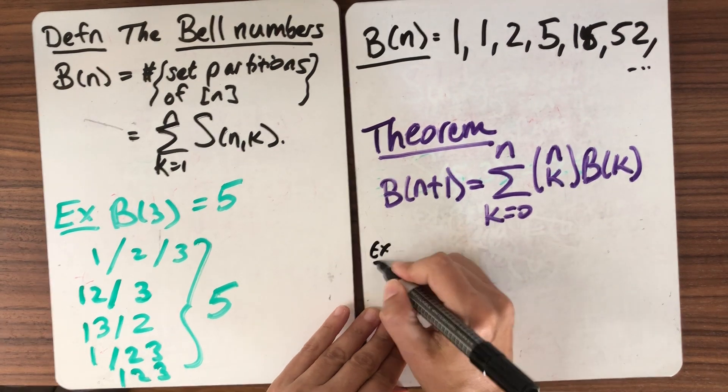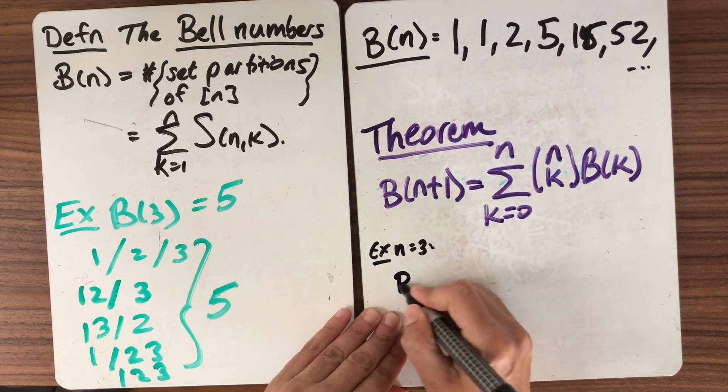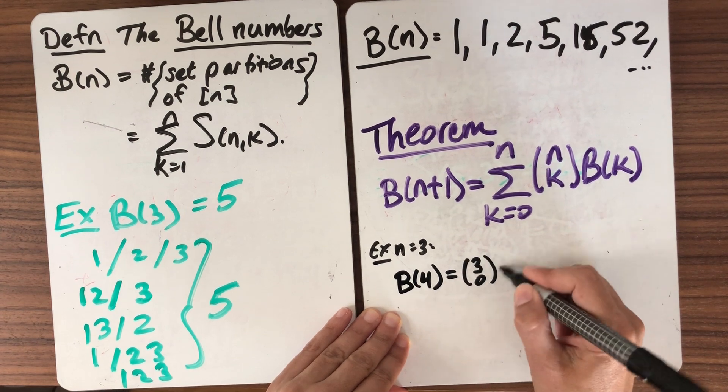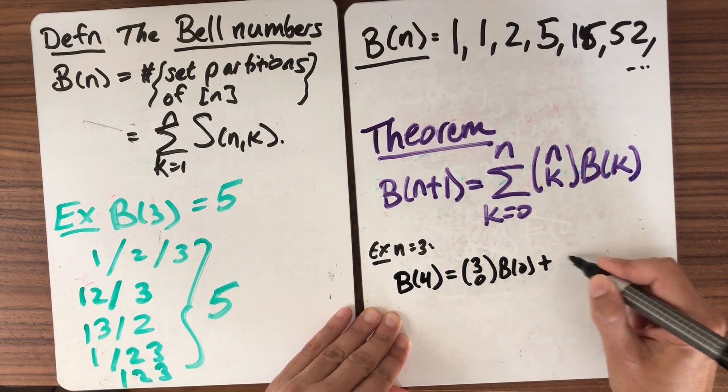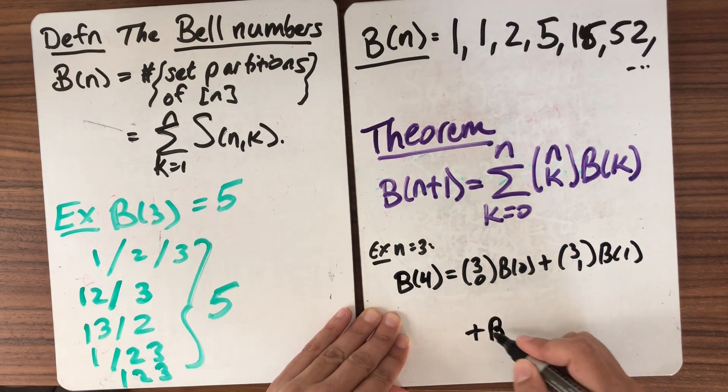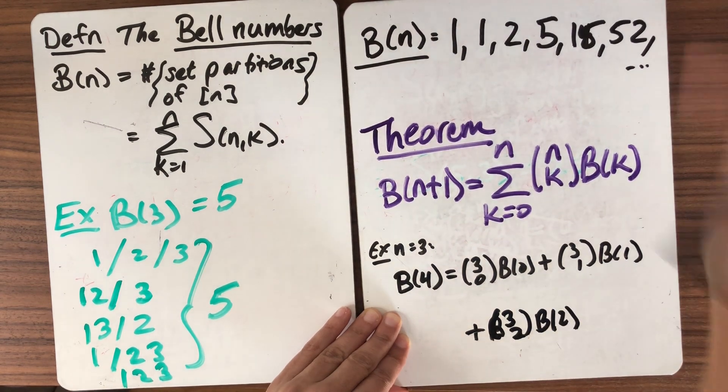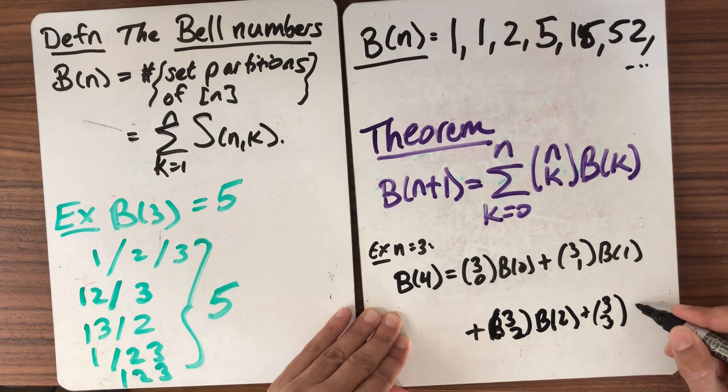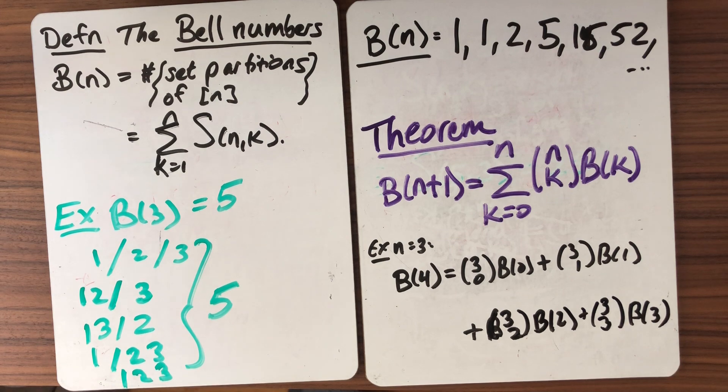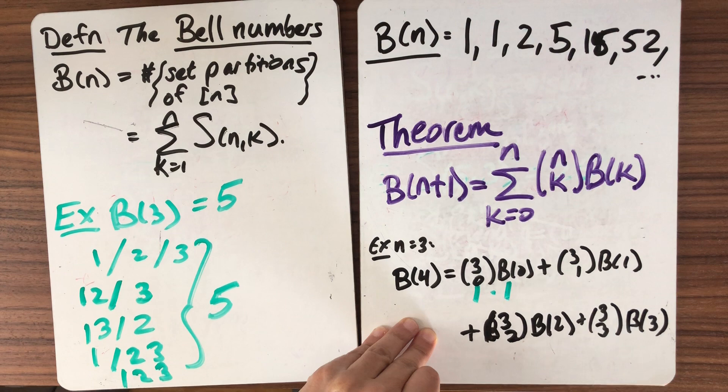Let's do an example based on the data we have, say, with n equals 3. So n plus 1 is 4. So this will tell me that B(4), which is what I'm after, should be 3 choose 0, B(0) plus 3 choose 1, B(1) plus 3 choose 2, B(2) plus 3 choose 3, B(3). So I have all the data out here, so let's just watch this work. So 3 choose 0, there's one way to do nothing. So that's 1, and B(0) is 1, right?